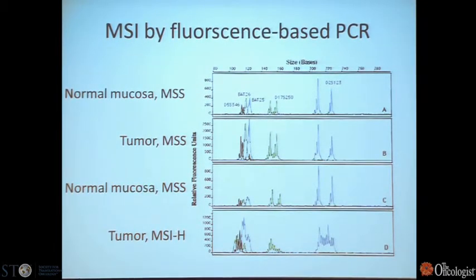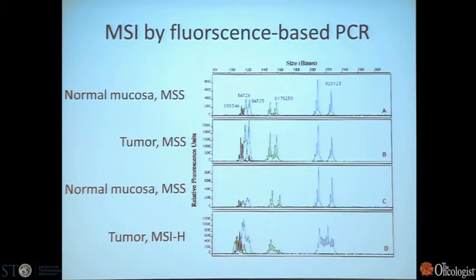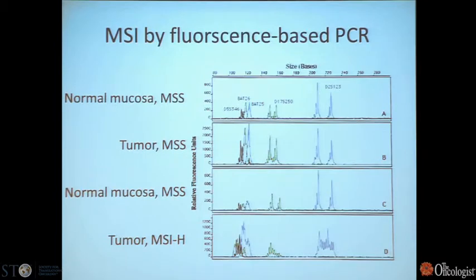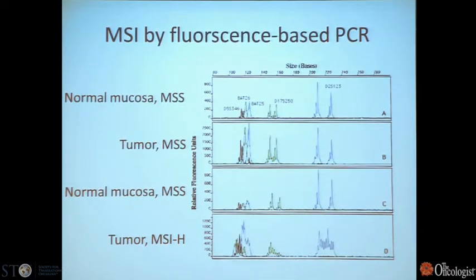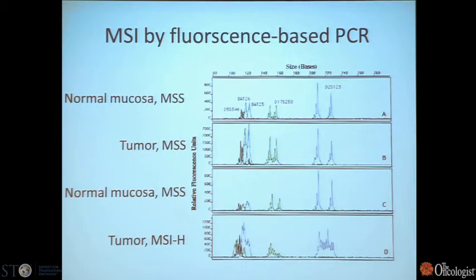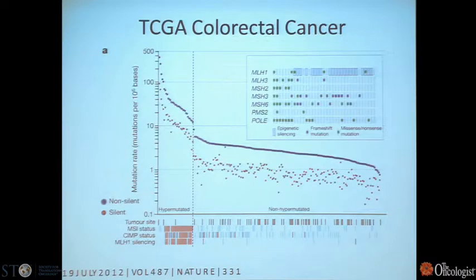The other way to look at this is by fluorescence PCR. Here you see normal mucosa with five markers, and in a microsatellite stable tumor there is no difference. In an MSI high tumor, these markers are basically repeated in between. That is what a DNA-based microsatellite instability test would look like.